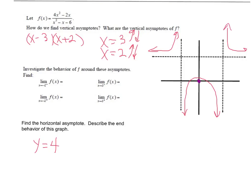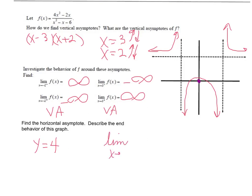As x approaches the vertical asymptote at negative 2 from the left, f of x goes to infinity. Approaching from the right, it goes to negative infinity — opposite directions. At the other vertical asymptote at x equals 3: from the left it's going to negative infinity, and from the right it's going to positive infinity — also opposite directions. For the end behavior at the horizontal asymptote: the limit as x approaches negative infinity of f of x is 4, and likewise the limit as x approaches positive infinity of that function is also 4.